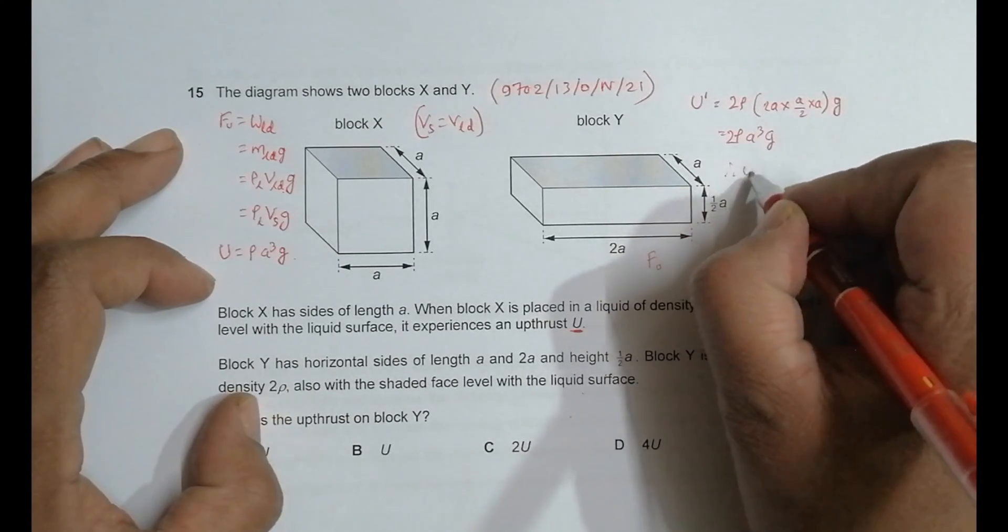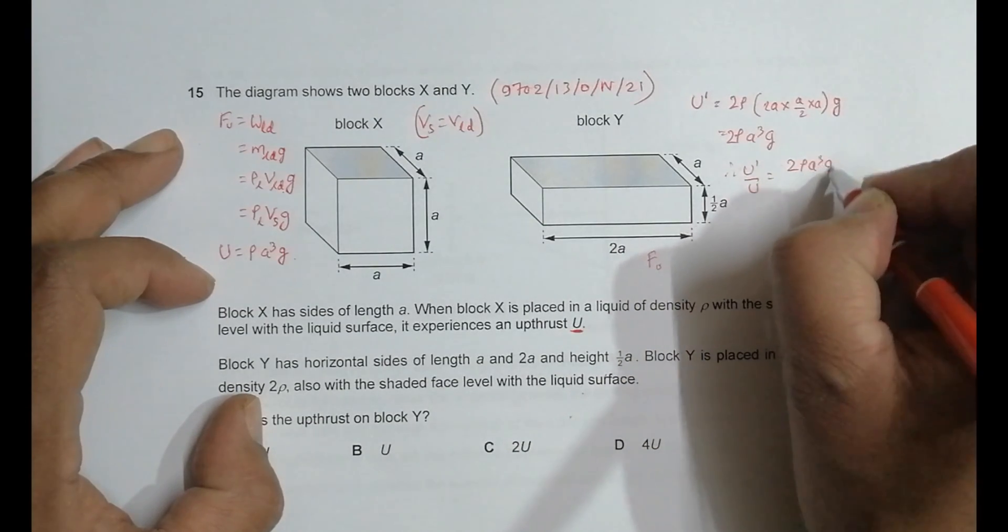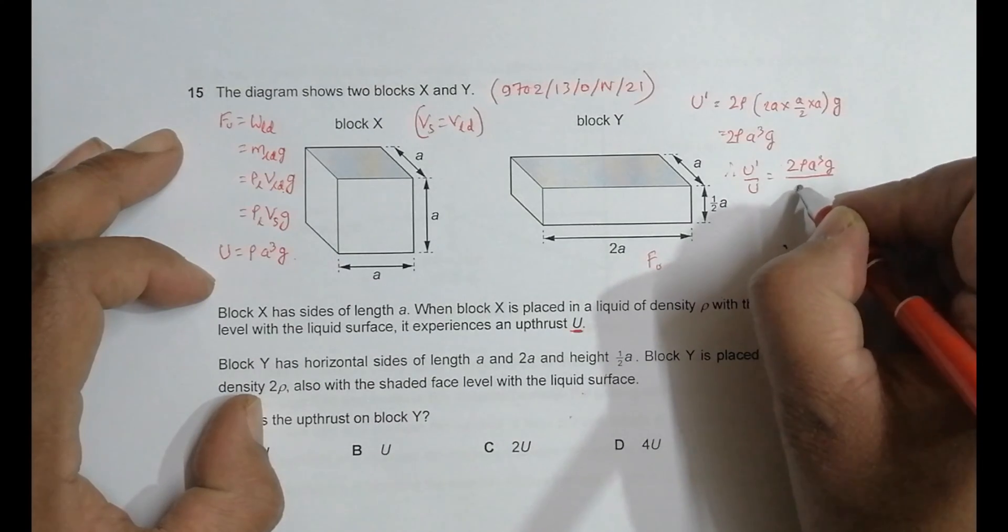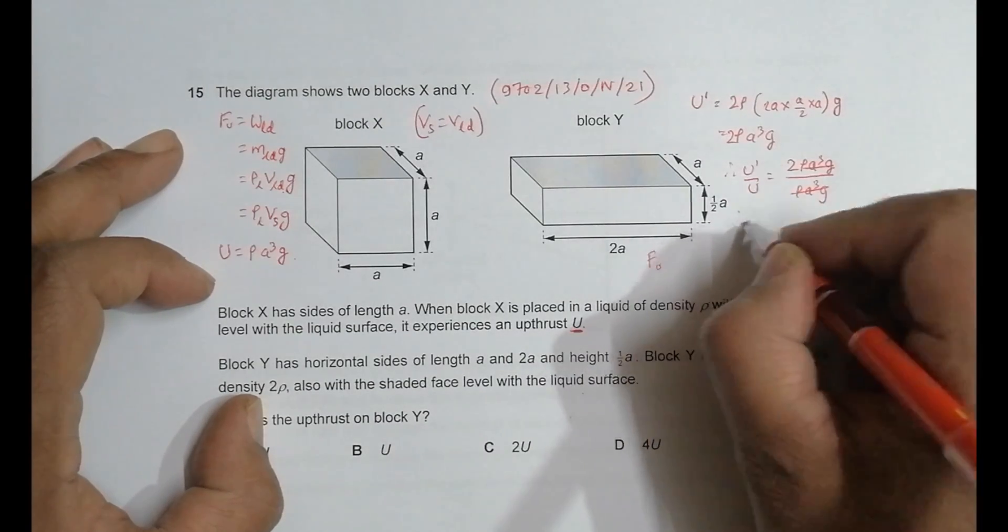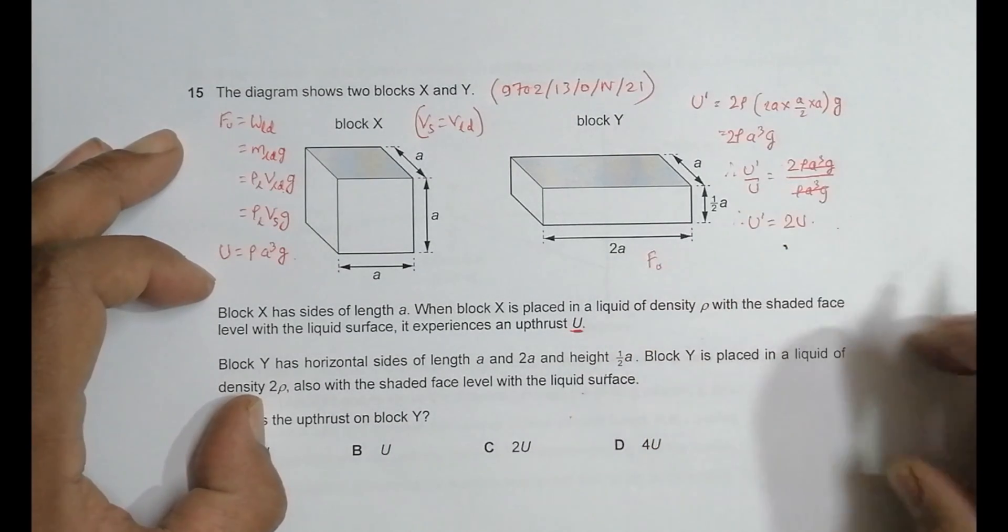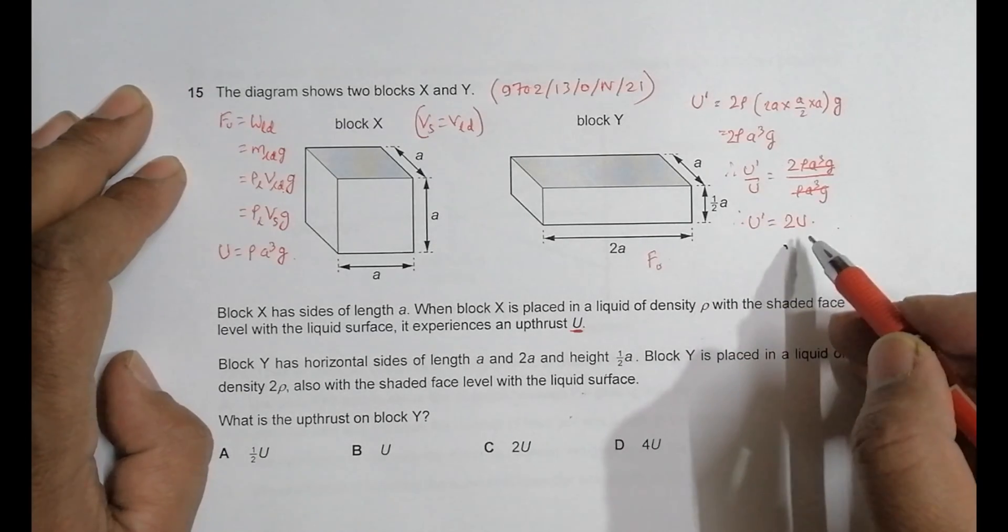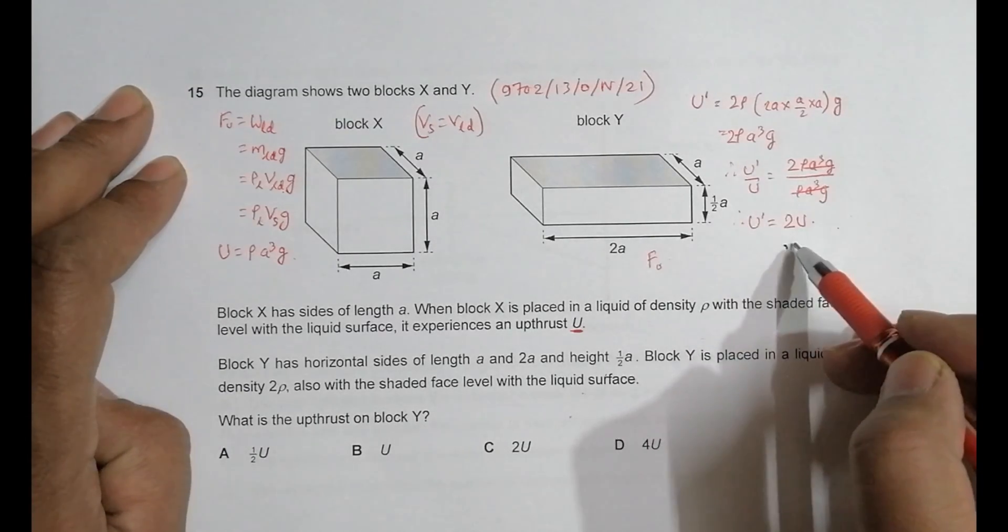Therefore, U'/U equals 2ρa³g divided by ρa³g, so U' equals 2U. This means the new force of upthrust is twice the previous one, which is choice C. The volume of liquid displaced is the same